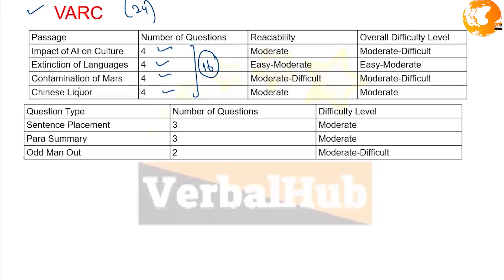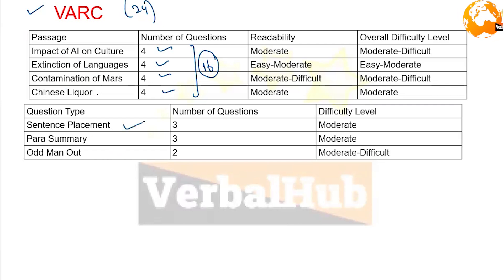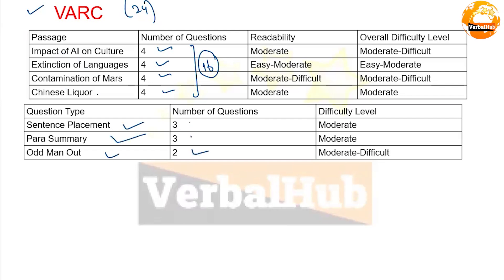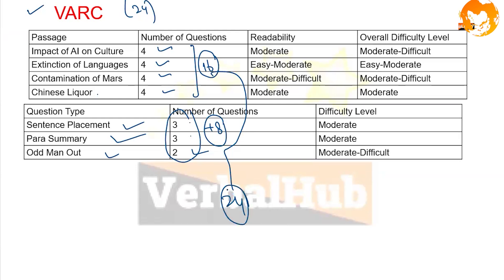Other RC passage topics included contamination of mass Chinese liquor and similar themes. For other question types: sentence placement had three questions, para summary had three questions, and odd one out had two questions — totaling eight questions — bringing the verbal section grand total to 24.